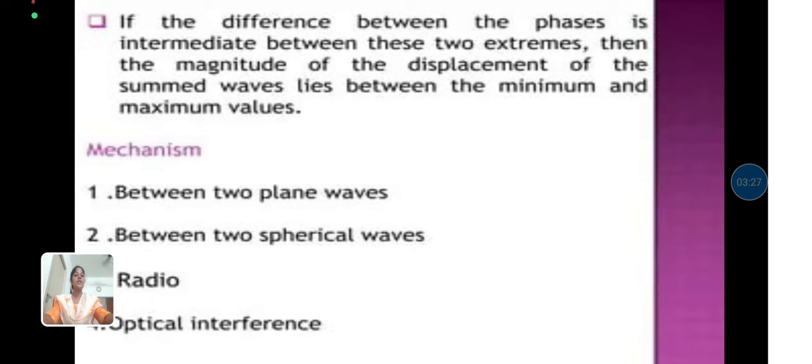The mechanism of interference occurrence is that it occurs between two plane waves and also between two spherical waves. It should be in the radio waveform and also the optical interference.